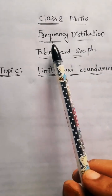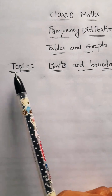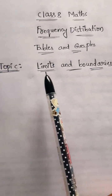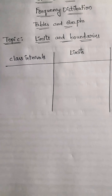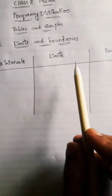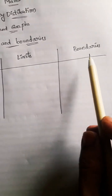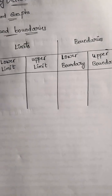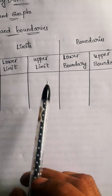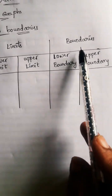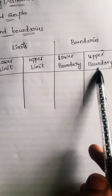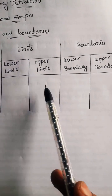Class 8 mass frequency distribution tables and graphs. The topic is limits and boundaries. Let us discuss class intervals, limits, and boundaries. In limits, we have lower limit and upper limit. In boundaries, we have lower boundary and upper boundary.